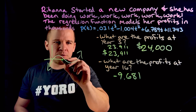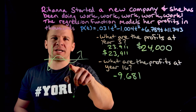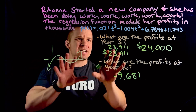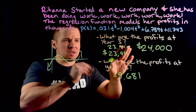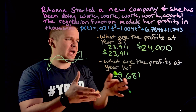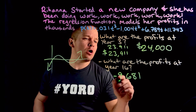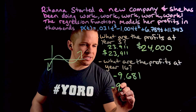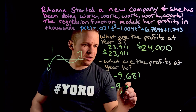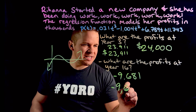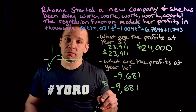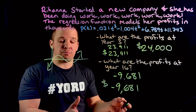They were profitable, life was good, maybe we're like right around here. So hey, it's going to be okay, Rihanna, it's going to be okay. So what are my profits though? To answer the question here, it's going to be negative $9,681.